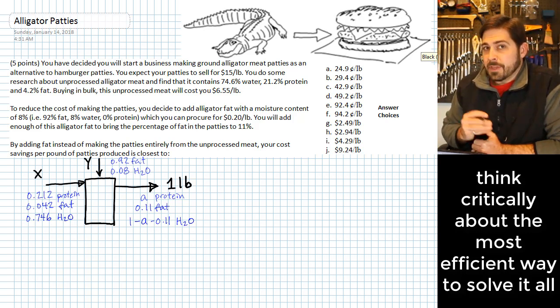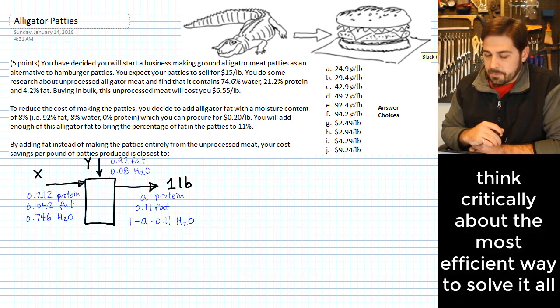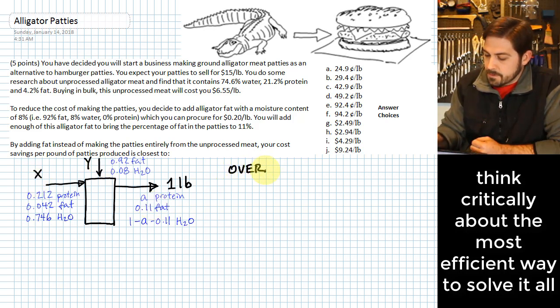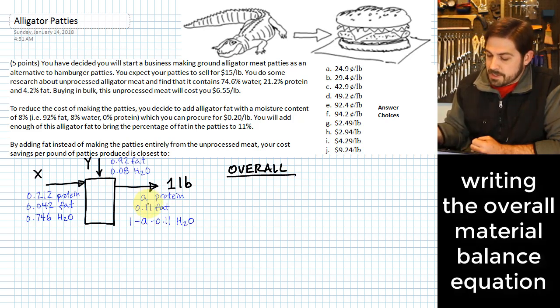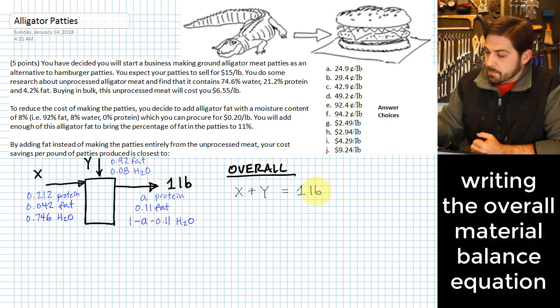We might even be able to do better than a 3x3, though, if we can identify the right equations to solve first. And as I look at this, what helps is if you can identify equations that will eliminate one of your unknowns. And when I look at this, if we look at an overall equation, so let me actually write this overall, what we'll notice there is that we won't need to take into account this A variable if we write the overall equation. Instead, what we're going to have is we're going to have X plus Y is going to equal one pound.